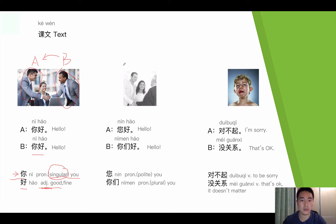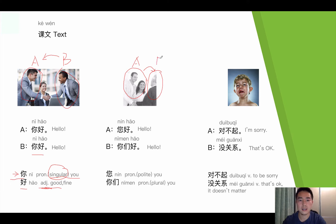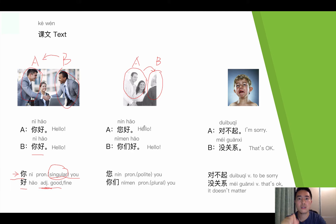Now let's go to Conversation 2. In this conversation, we see two young people greeting an elderly person. The two young people are A, and the elderly person is B. A says 您好. Pay attention — this is 您好, not 你好, because we use 您 to show respect.